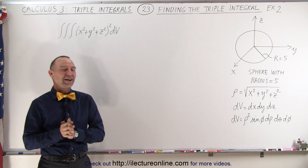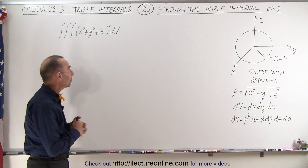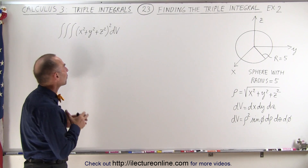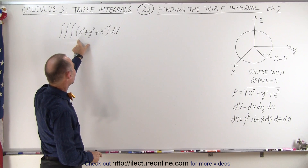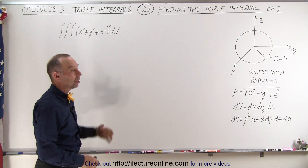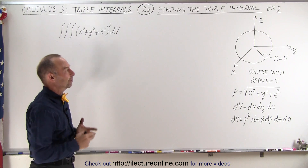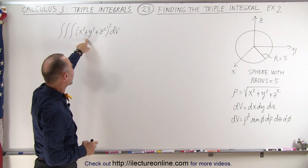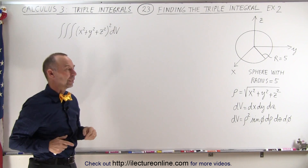Welcome to ElectronLine. Our next example is similar to the previous example. We are not just calculating the volume, but we're multiplying the volume element by some function — in this case x squared plus y squared plus z squared, which is really the equation of a sphere. So what we're doing here is multiplying the equation of a sphere times a volume element and then doing a triple integral.